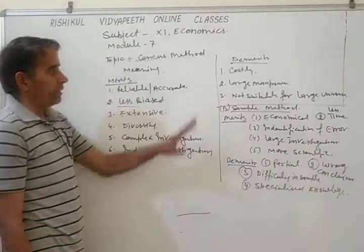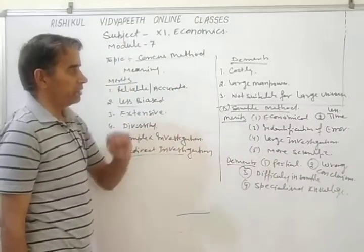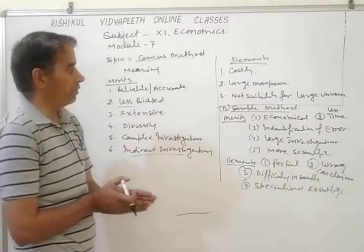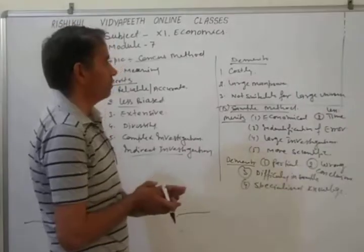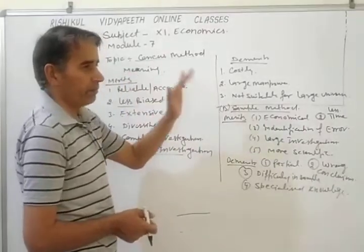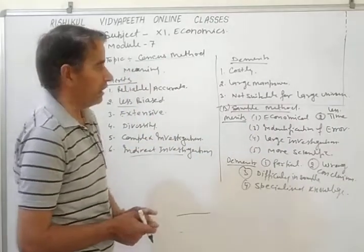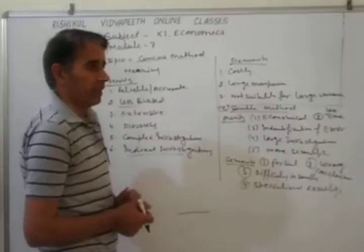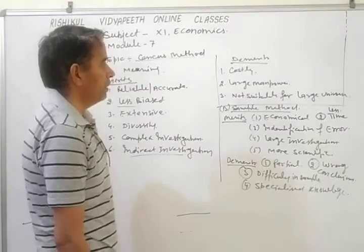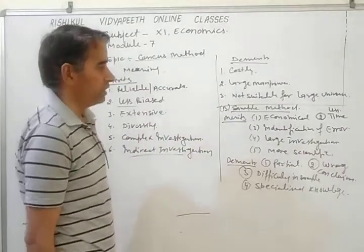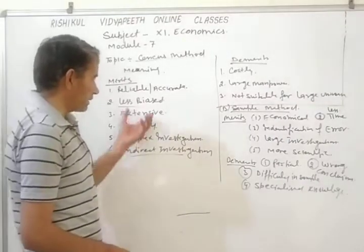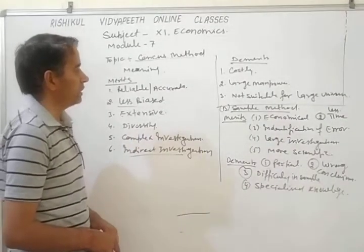So these are the merits and demerits of the census method and sample method. On the basis of these, we can also compare both methods. On the basis of cost, census method is costly but sample method is less costly. On the basis of reliability or accuracy, census method is more accurate and reliable, but sample method is not so much reliable or accurate.